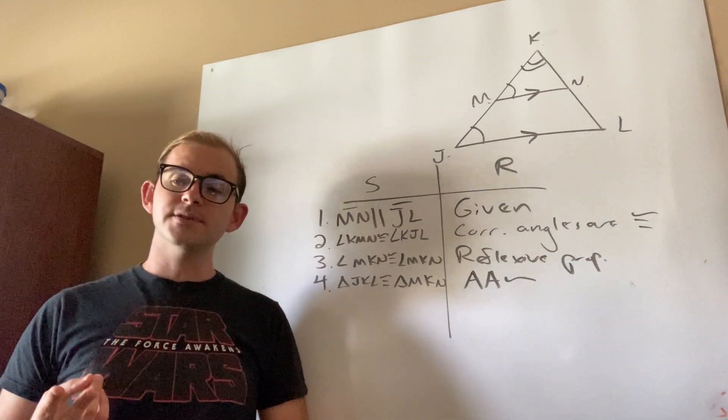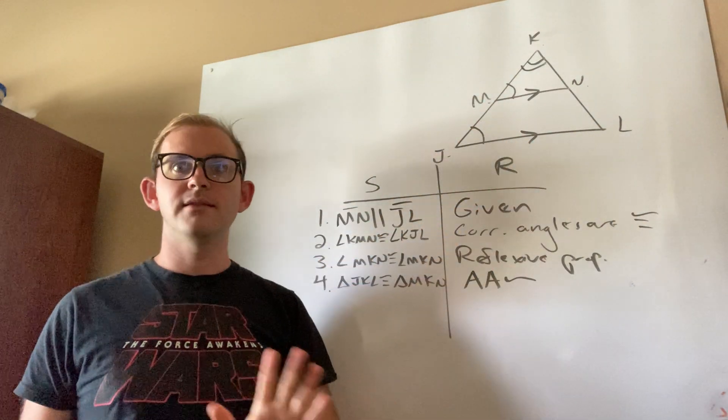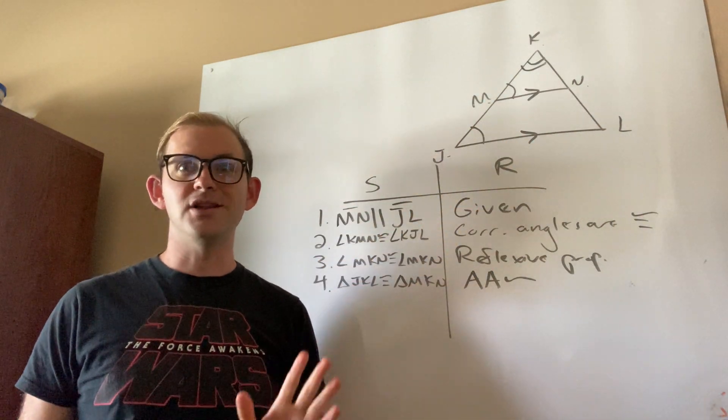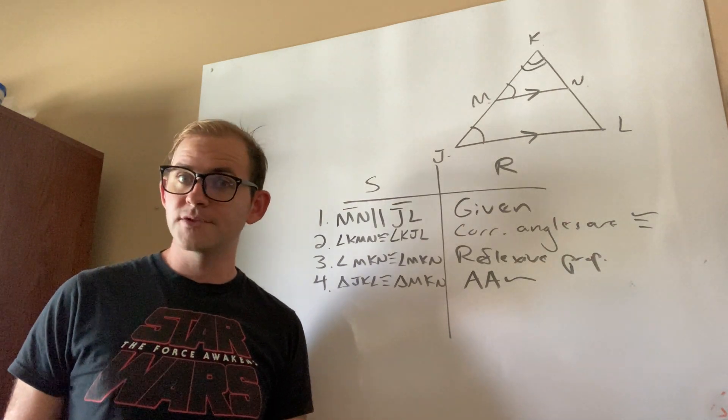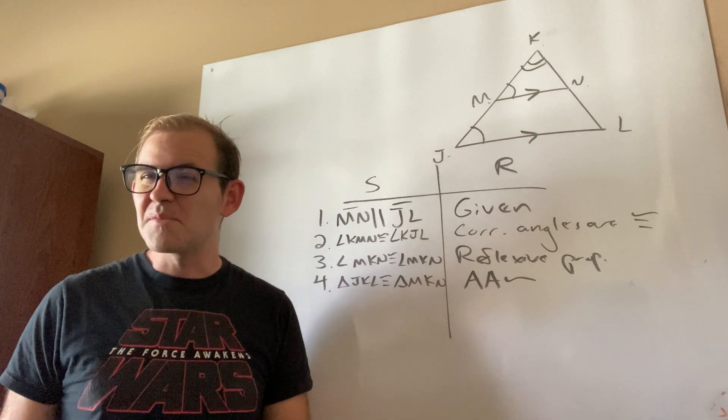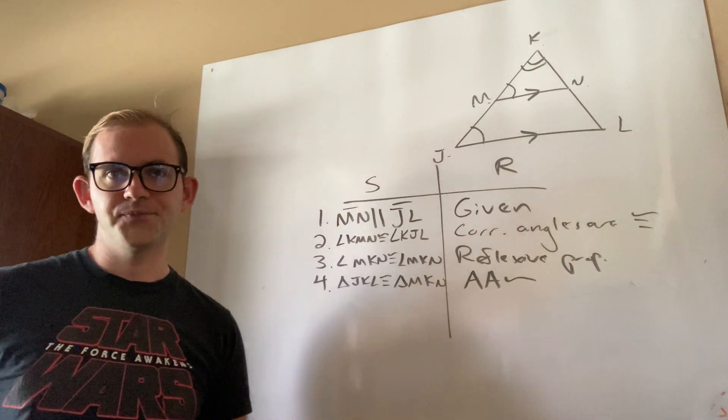Big takeaway number two, when you guys are given that two lines are parallel, that should automatically start setting off alarm bells in your mind. Either it means we're going to have corresponding angles, or the other one that shows up every so often is alternate interior. So we might see that in a future proof.